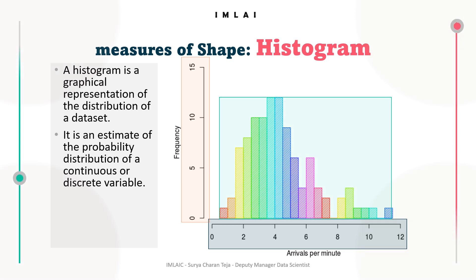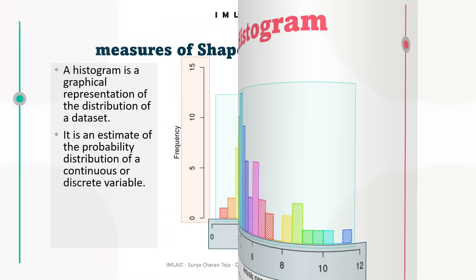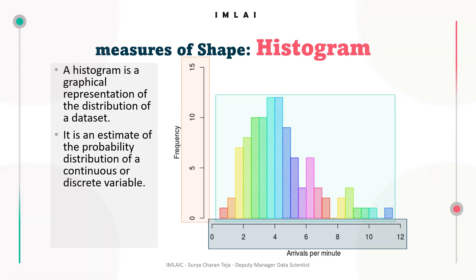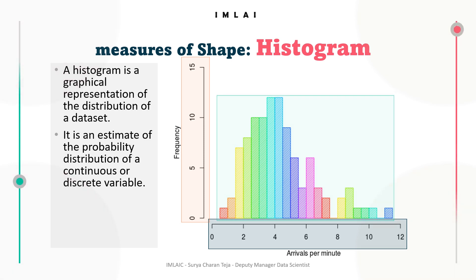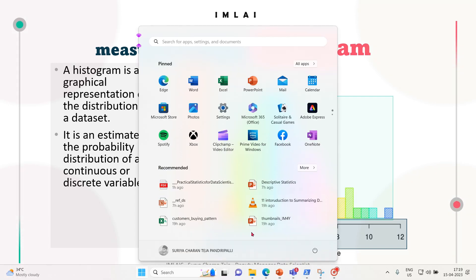Histograms are useful for visualizing the shape, spread, and central tendency of a data set. They provide insights into the distribution of the data, such as whether it is symmetric, skewed, or bimodal. Histograms can also reveal outliers, gaps, or clusters in the data, and can help in identifying potential data distribution patterns.